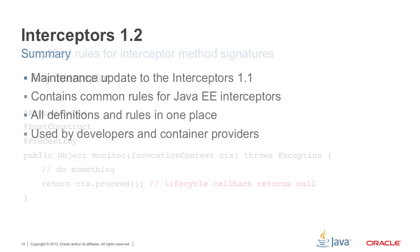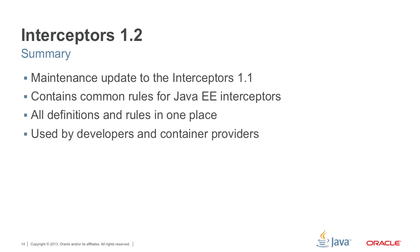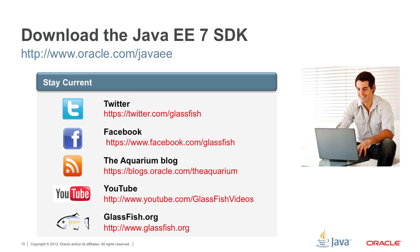It is a maintenance update to interceptors 1.1 with a major revamp of the spec document itself — not major changes to what interceptors are, but major improvements to the specification document, with all definitions and rules in one place and several new features useful for developers and container providers. You can try it yourself and let us know if it is indeed a better document and if those new features are useful for you. Download the SDK, follow us on Twitter and Facebook, read the Aquarium blog, and download GlassFish from glassfish.org. Let us know and file bugs both in the implementation and the specification if you find any — we will try to improve it in the next release. Thank you.